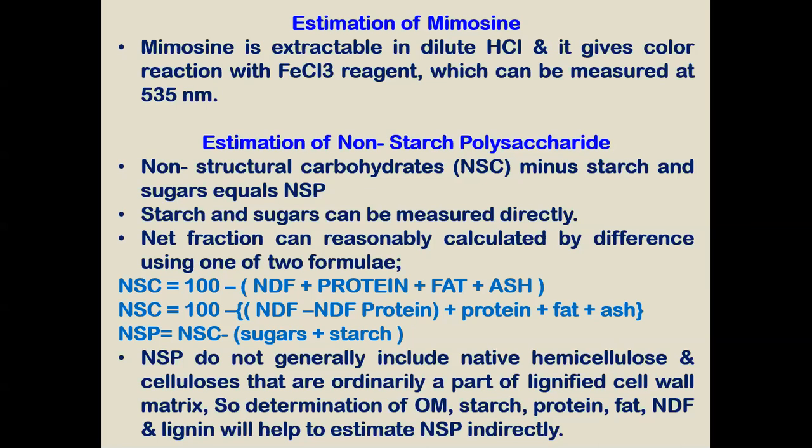Mimosin is an anti-nutritional compound that is extractable in dilute HCl, and it gives a color reaction with ferric chloride reagent, which can be measured at 630 nm. For estimation of non-structural carbohydrates, starch and sugar are subtracted to give the NSC value. Starch and sugar can be measured directly, and the net fraction can be calculated by reference to two different formulas as shown in the slide.